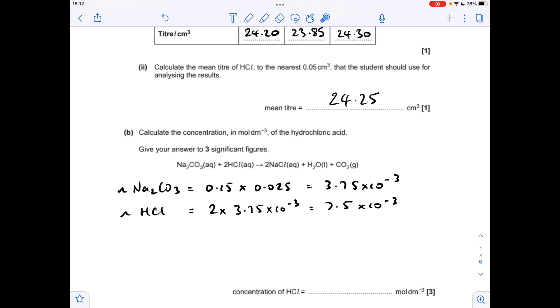The concentration of the HCl is the moles divided by the volume. The volume is going to be that mean titre, and again just remember that the volume needs to be in decimeters cubed. The concentration comes out to three significant figures at 0.309.